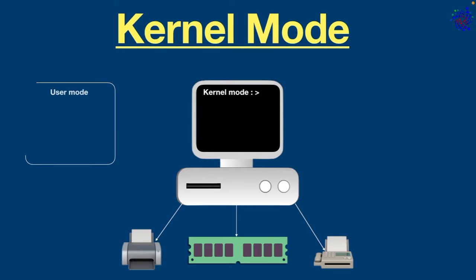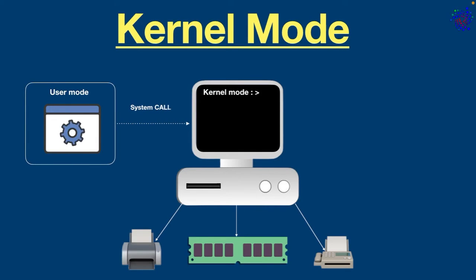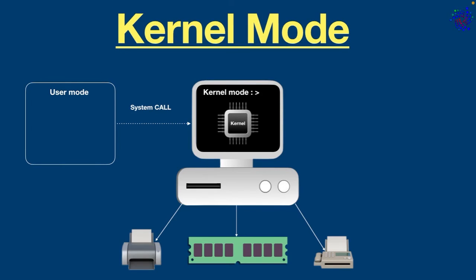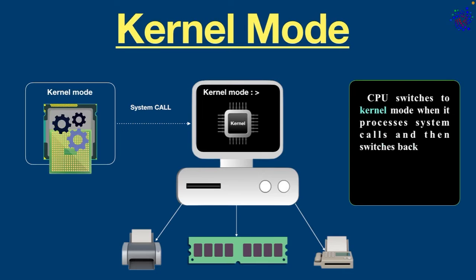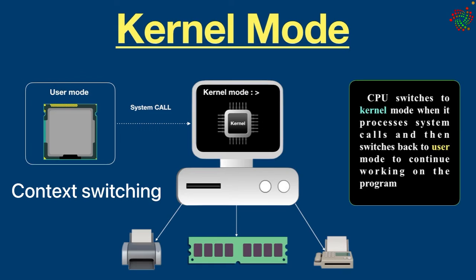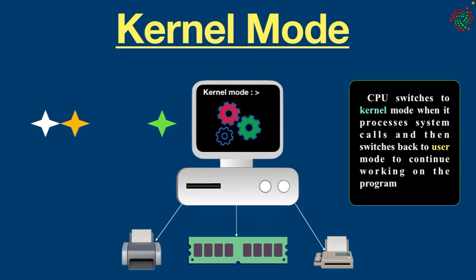For example, if an application is running in user mode, it must make a system call to the kernel to access system resources. The kernel then acts as a gatekeeper between the application and resources. The CPU switches to kernel mode when it processes system calls, and then switches back to user mode to continue working on the program. This transition is known as context switching.